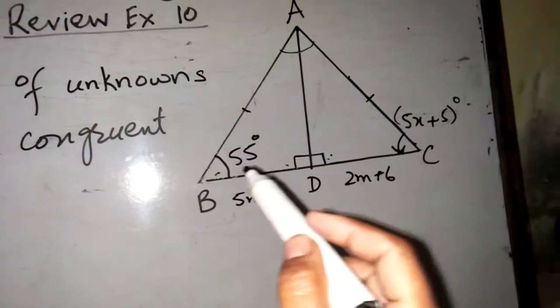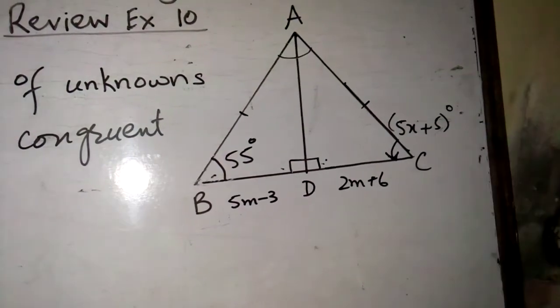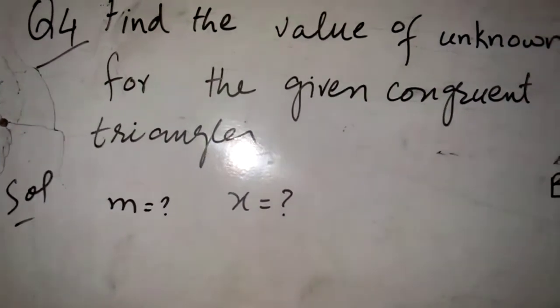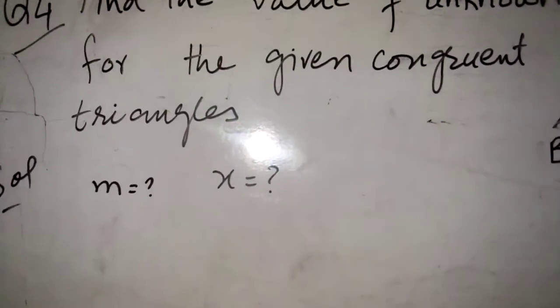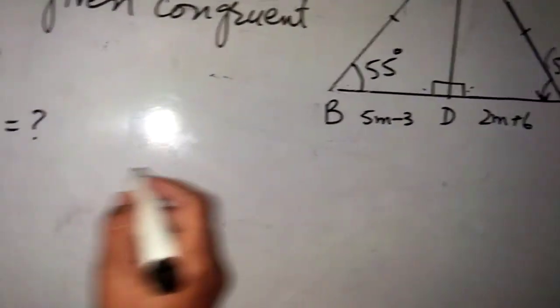Angle B is 55 degrees and angle C is 5x + 5 degrees. In this question, m and x are unknown values. We will find m and x. As we know that both triangles are congruent, so BD side will be congruent to DC.